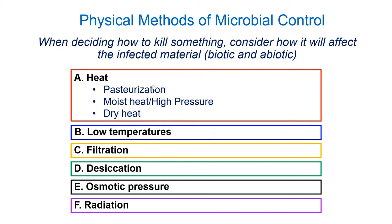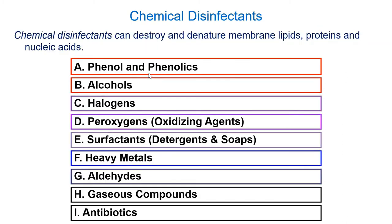That is our physical methods of microbial control. There are a few other nuances, but the big thing is autoclaving is super important, UV radiation is getting more important for some things, and everything else has its little nuances where it might be useful. Filtration has its uses in certain circumstances, and pasteurization is more of a food industry thing.